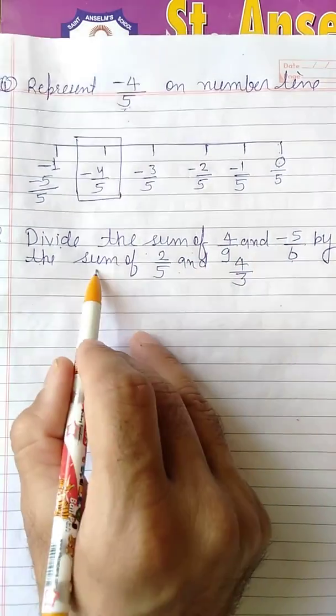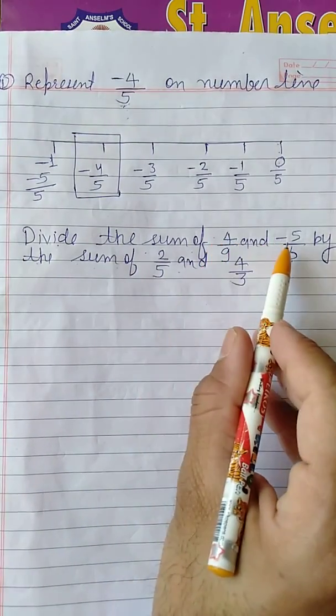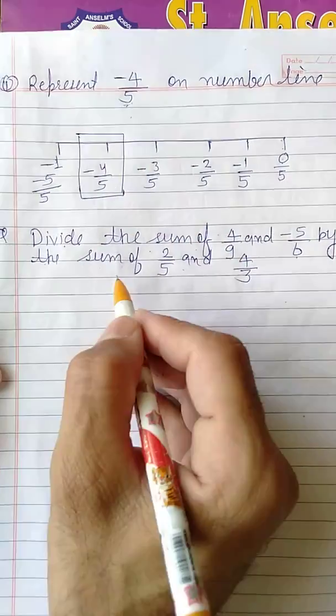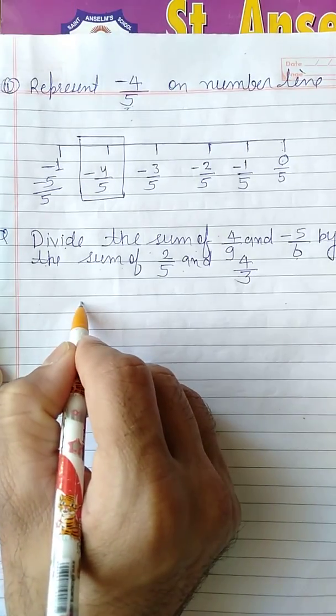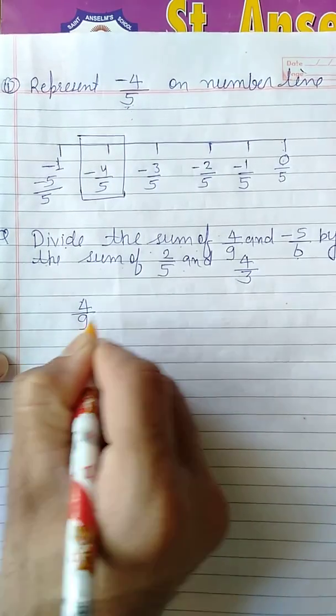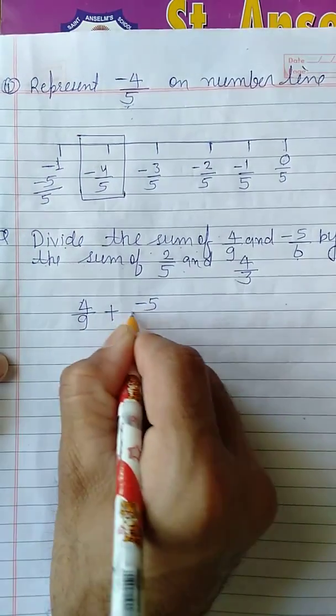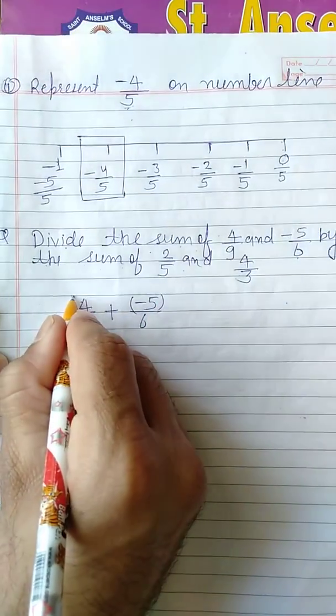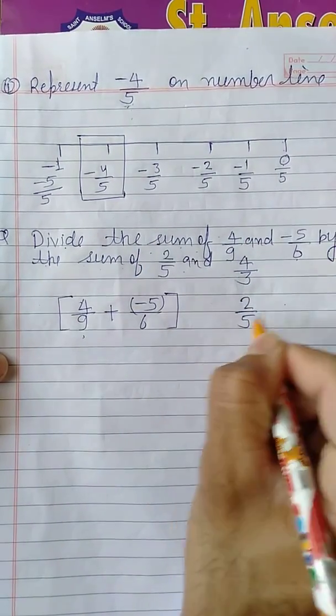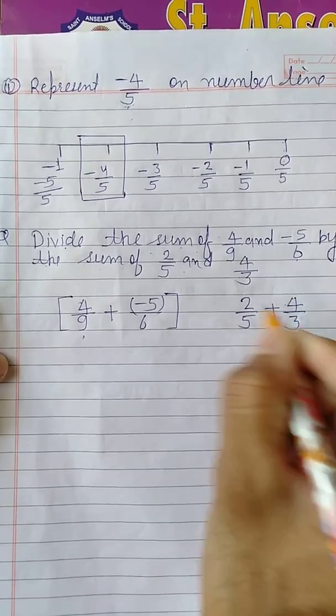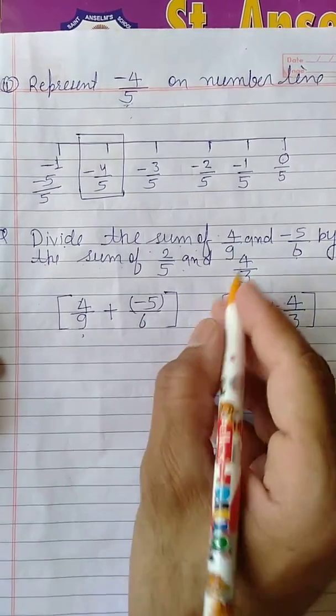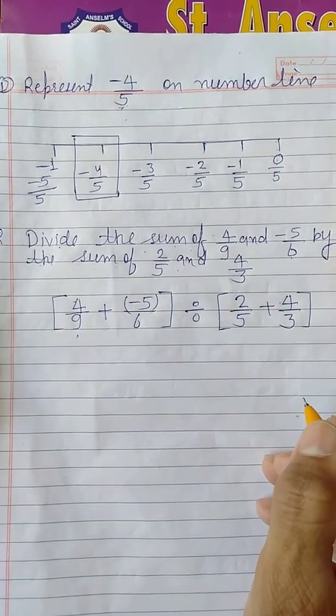Divide the sum of four upon nine minus five upon six by the sum of these two - in dono ke sum me in dono ke sum ka divide karna hai. Right, so let's write into expression form. Thus according to question, sum of these two means four upon nine plus minus five upon six. This is the sum of these two. Sum of these two: two upon five plus four upon three. This is the sum of last two. Divide the sum of this by this means divide - this is the division.